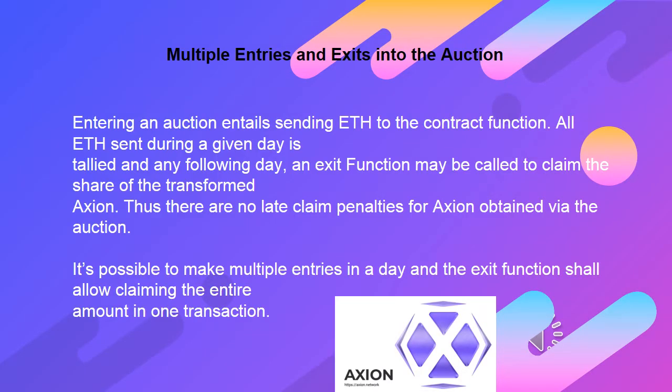Multiple entries and exits into the auction: Entering an auction entails sending ETH to the contract function. All ETH sent during a given day is tallied, and on any following day an exit function may be called to claim the share of the transformed Axion. Thus there are no late claim penalties for Axion obtained via the auction. It's possible to make multiple entries in a day, and the exit function shall allow claiming the entire amount in one transaction.